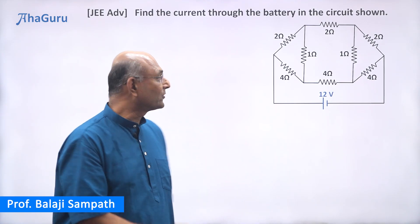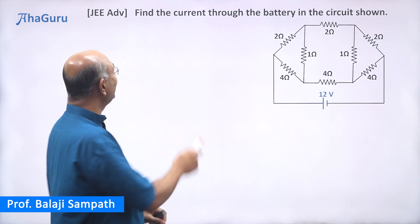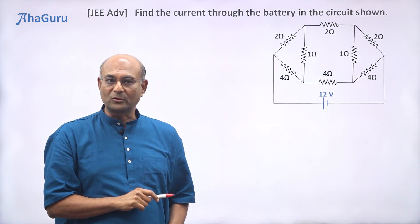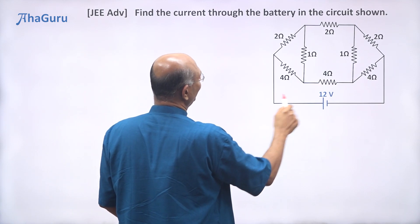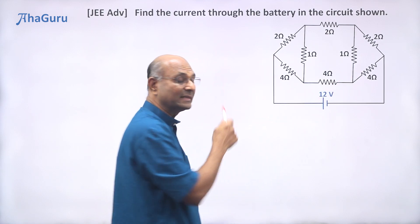Here is an interesting electric circuit question that came up in JEE Advanced in 2012. The question is asking us to find the current through the battery in this given circuit.